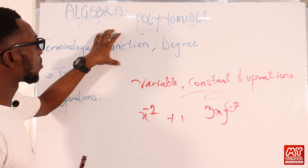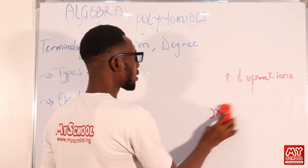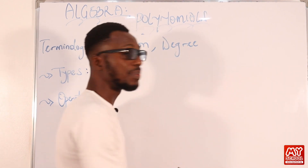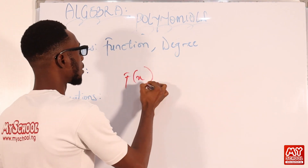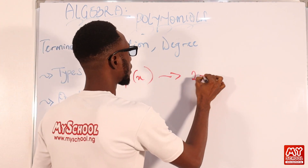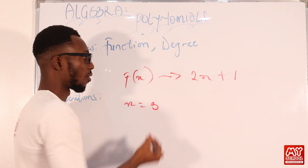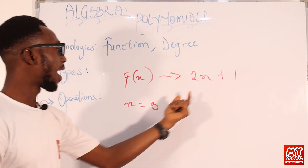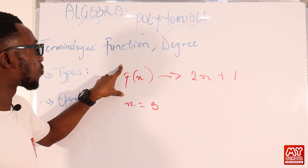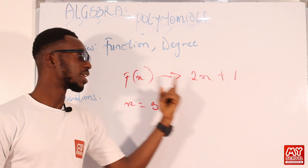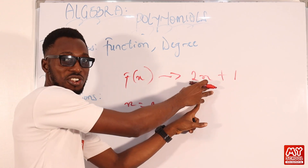First, we have something called a function. A function is a basic rule that maps an input to an output. For example, f(x) = 2x + 1. If x is 3, then 3 is the input and the result is the output. You are looking at a rule — the function — that matches this input to this output.